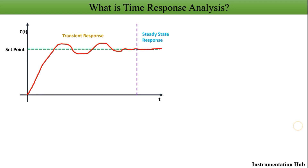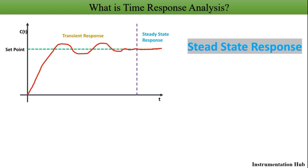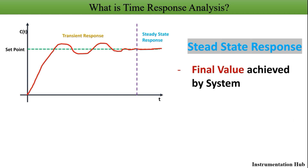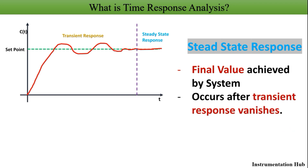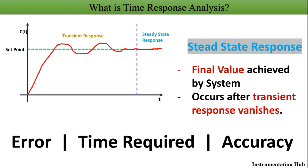Now let's consider the second type, which is steady state response. Steady state response is the final value achieved by the control system. The output response of the system gets stable in this phase, and steady state response occurs after the transient response vanishes. It provides information about the error or difference between the desired output and actual output, and also the time required to reach the steady state. As you can see in the figure, the steady state response is almost near to the set point, so it defines the accuracy of the system. You have to remember these terms for designing the control system.